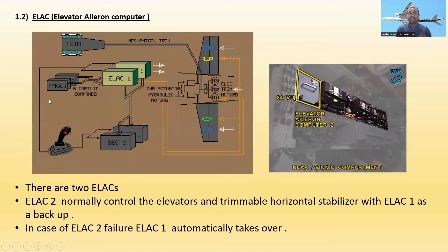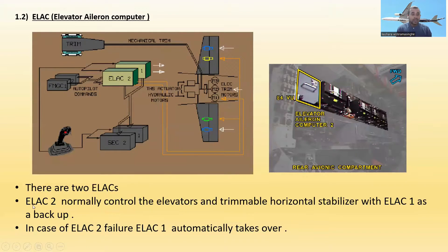1.2 — ELAC means Elevator ELAC Computer. There are two ELACs: ELAC 1 and ELAC 2, located in the rear avionics compartment. ELAC 2 normally controls the elevators and the Trimmable Horizontal Stabilizer, with ELAC 1 as a backup. Only one computer is used at a time — they don't operate simultaneously. In case of ELAC 2 failure, control is automatically transferred to ELAC 1.